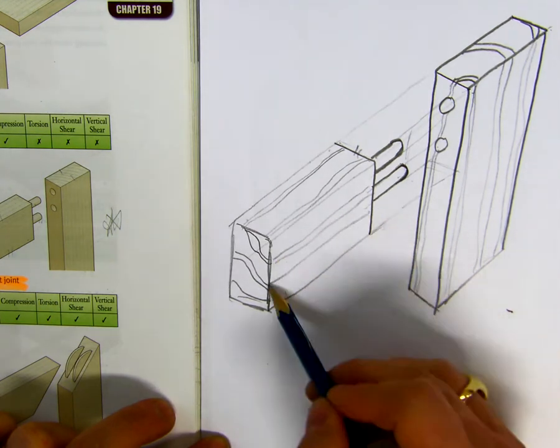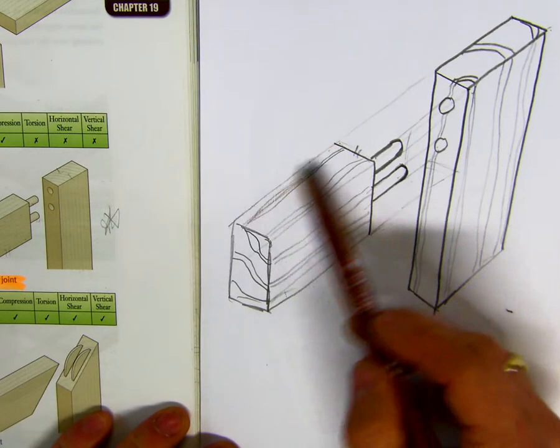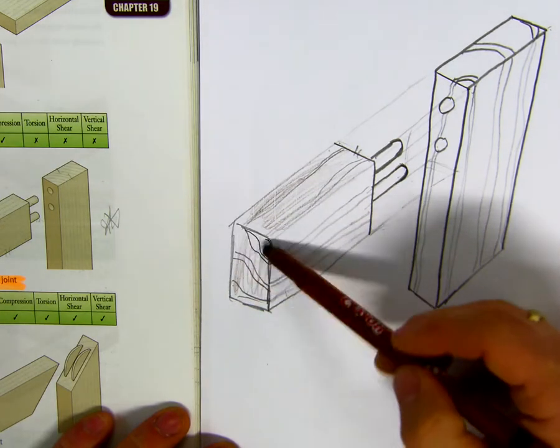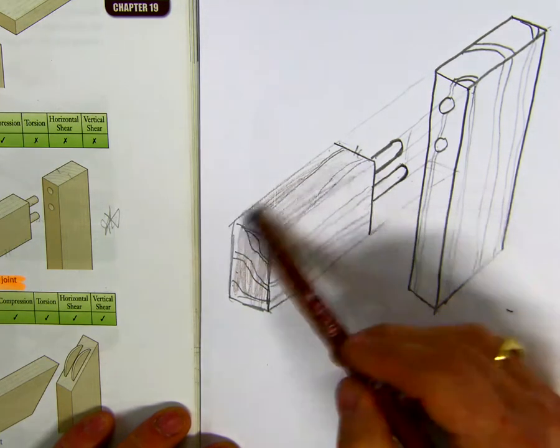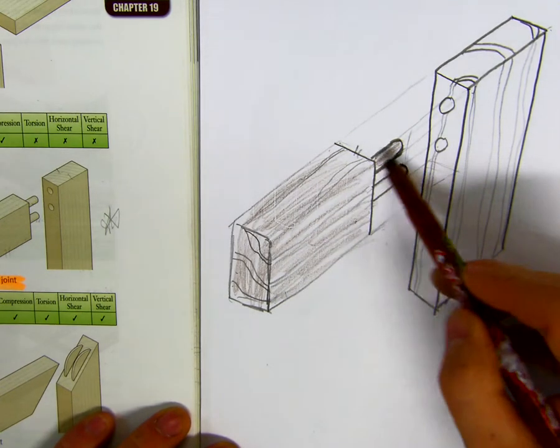So next thing we're missing is color. So we're just going to color it in lightly. It's not very good brown, but color in lightly, so my color now is starting to hide some of my pencil lines. Just color in very lightly. That's just a quick job.